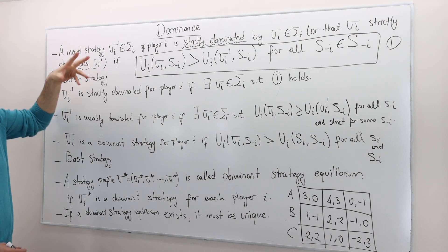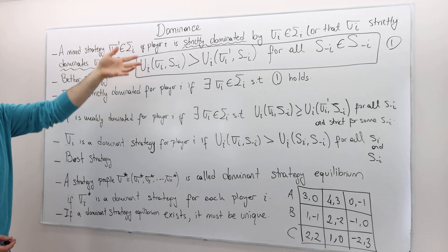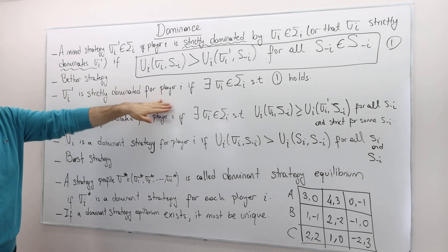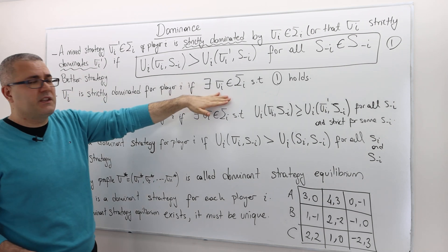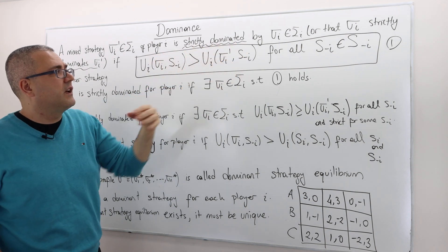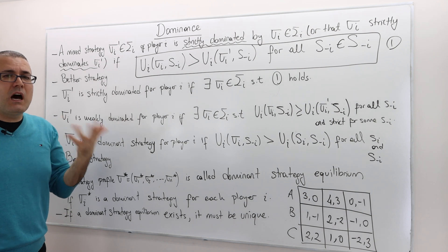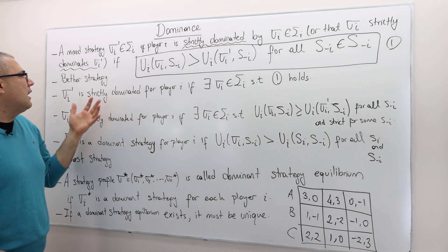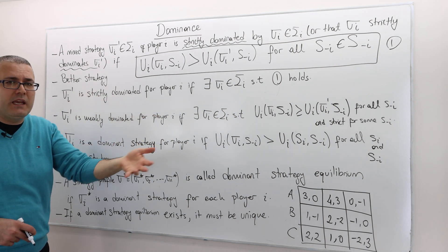I am going to twist this definition slightly. Sigma_i_prime is strictly dominated for player i means there exists some strategy of player i such that this inequality holds. When I say a strategy is dominated, I don't refer to who dominates it — I just say it's dominated, but that means there should be a strategy that's dominating it.